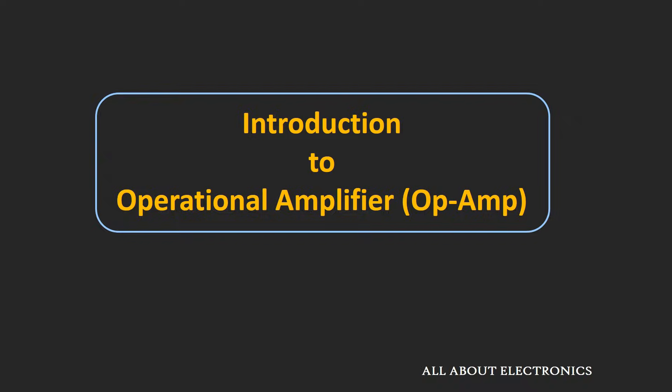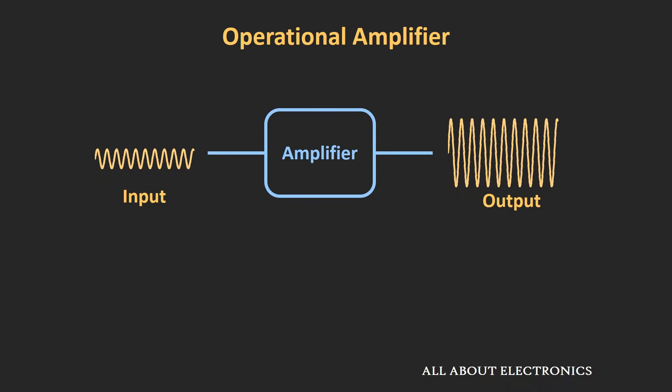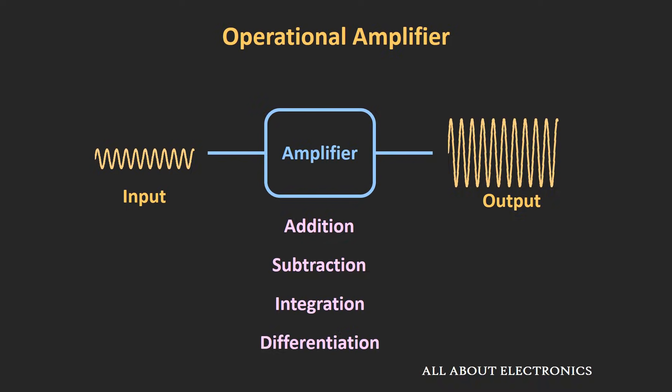As its name suggests, this op-amp is basically an amplifier, and the basic job of any amplifier is to amplify the input signal. In early days when digital computers were not evolved, different mathematical functions like addition, subtraction, integration, and differentiation were performed using this operational amplifier. So just by connecting few resistors and capacitors, it is possible to perform different mathematical operations, and that is why this amplifier is known as the operational amplifier.